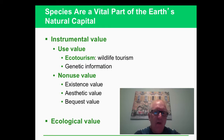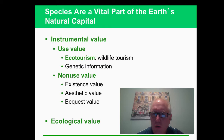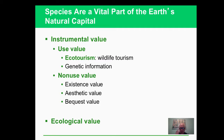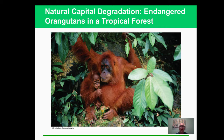We might also think about what goes on after we're gone - do we want these things available to our children and our children's children? And of course, what do they do in the food chain? What's their role in the ecosystem? What would happen if they were gone? We've talked about how each part of the ecosystem has its own important role. And here are some orangutans, very cute, and they are endangered in a tropical forest.